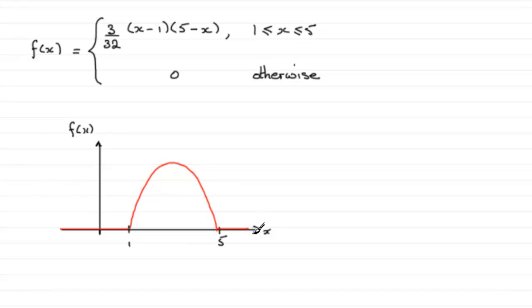Okay, well that's the probability density function sketched, and then in the next part it says write down the mean mu of x.